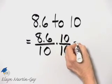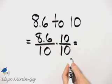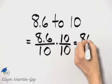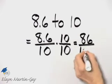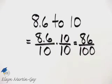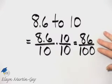So in the numerator, 8.6 times 10 is 86. In the denominator, 10 times 10 is 100. Now notice this is still not in simplest form.